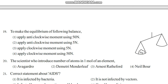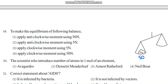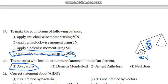To make equilibrium of following balances: this side you have 5 kilogram, so 5 into 10 is 50 newton. Same way you will have another 50 newton. This is anticlockwise, so you need clockwise moment of 50 newton. The scientist who introduced number of atoms in one mole of an element - that is Amedeo Avogadro, so that is what we got the Avogadro constant. I have discussed the first 20 MCQs. Hope you would gain the maximum. Thank you.